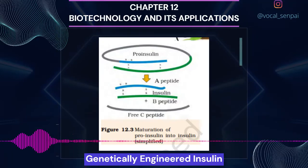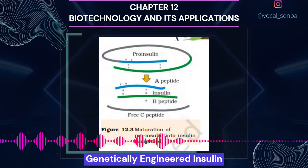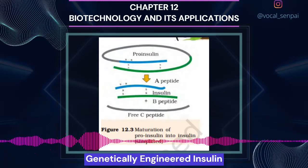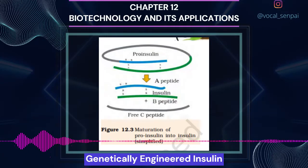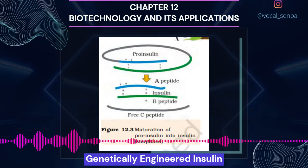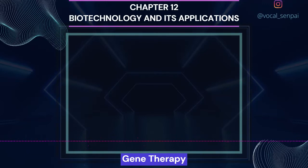Insulin consists of two short polypeptide chains, chain A and chain B, that are linked together by disulfide bridges. In mammals, including humans, insulin is synthesized as a prohormone, which contains an extra stretch called the C-peptide. This C-peptide is not present in the mature insulin and is removed during maturation. The main challenge for production of insulin using rDNA techniques was getting insulin assembled into a mature form. In 1983, Eli Lilly, an American company, prepared two DNA sequences corresponding to A and B chains of human insulin and introduced them in plasmids of E. coli to produce insulin chains. Chains A and B were produced separately, extracted, and combined by creating disulfide bonds to form human insulin.